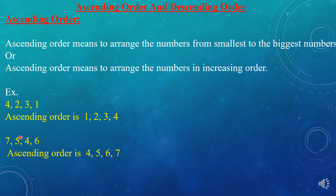The next example is 7, 5, 4, 6. What is the ascending order of these numbers? Which one is the smallest number? 4. So first we write 4, then 5 — 5 is bigger than 4 — then 6 — 6 is bigger than 5 — and at last 7.